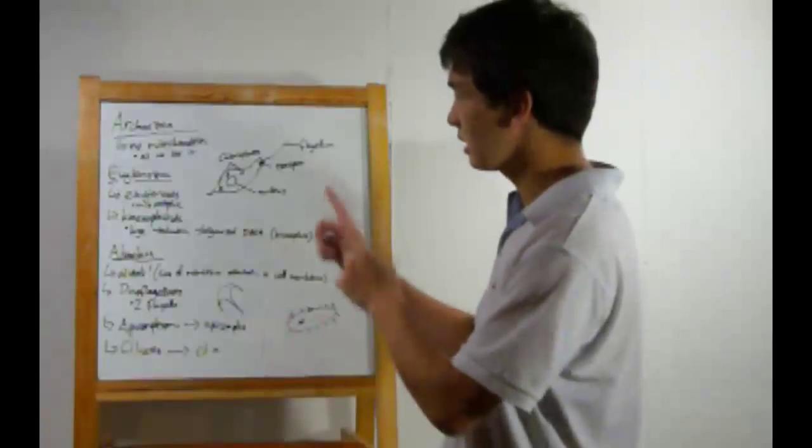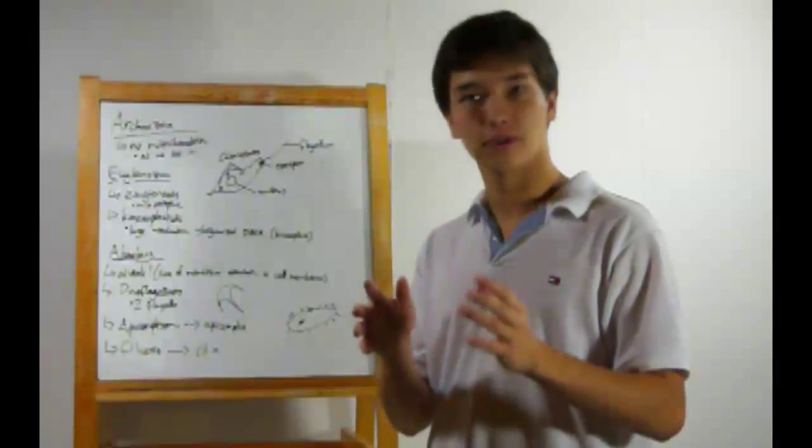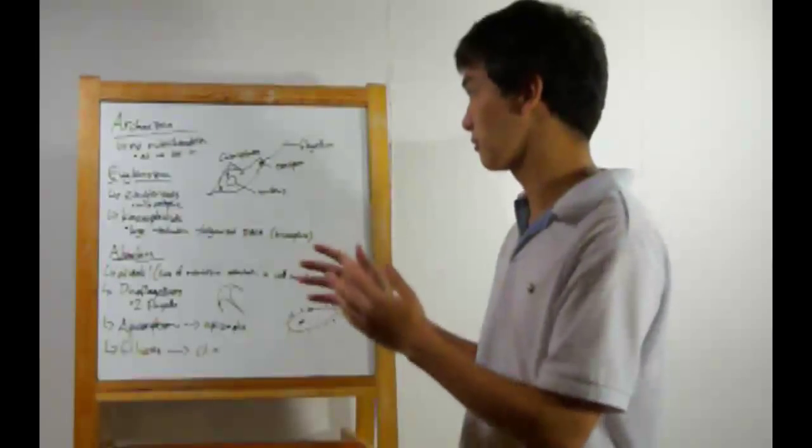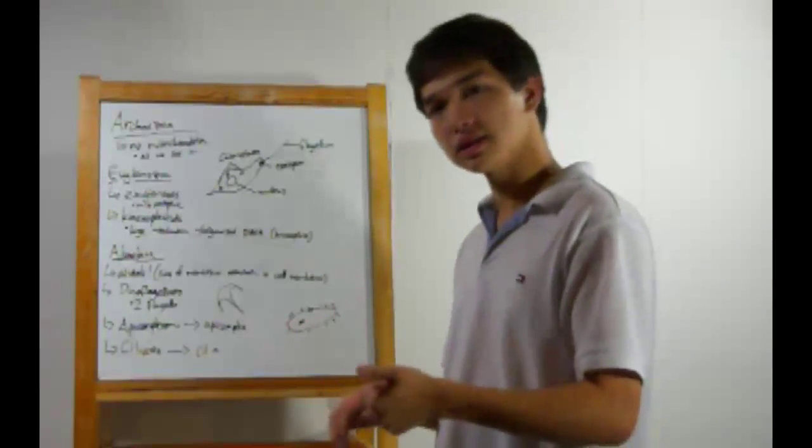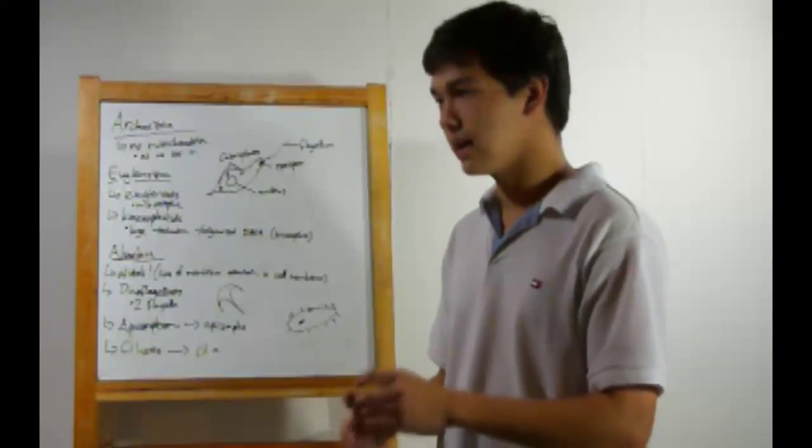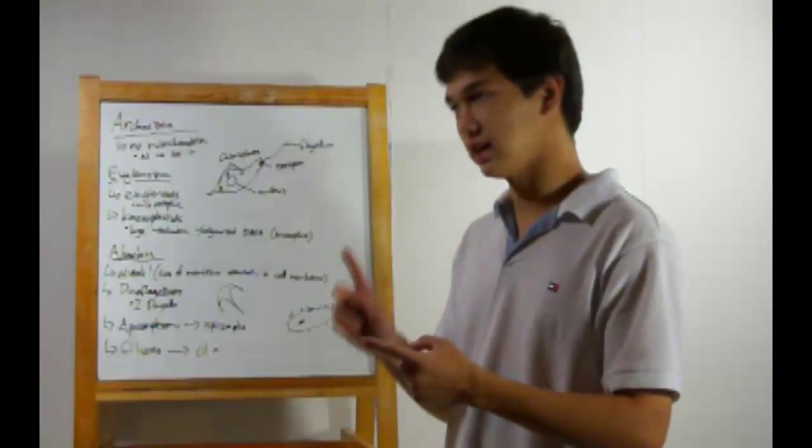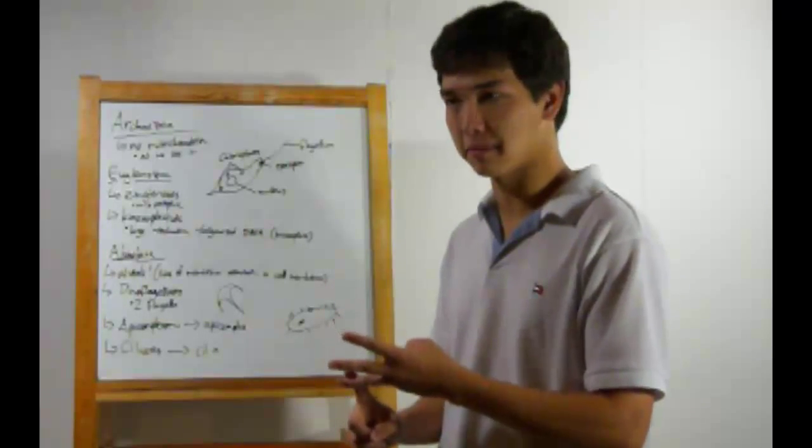Alright, now first up, the arcozoa. These are the oldest form of protists. These are the ones that evolved first. A lot of people say that they don't have mitochondria. Those that say they do have mitochondria refer to these organelles that don't have the electron transport chain, don't have their own DNA, and don't have a second membrane.